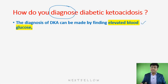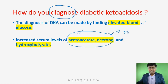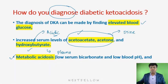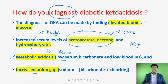Diagnostically, ketone bodies — acetone, acetoacetate, and beta-hydroxybutyrate — form due to beta-oxidation of free fatty acids. Acetone and acetoacetate appear in the urine, while beta-hydroxybutyrate remains within the plasma. Among all ketone bodies, beta-hydroxybutyrate is the most acidic. Metabolic acidosis is present; arterial blood gas analysis shows low serum bicarbonate, low blood pH, and increased anion gap.